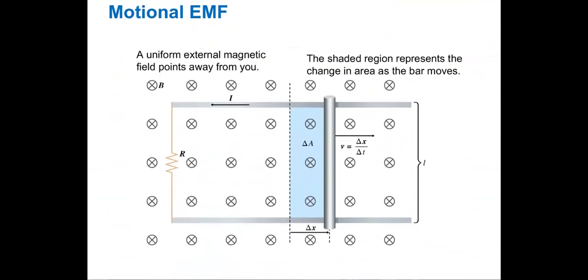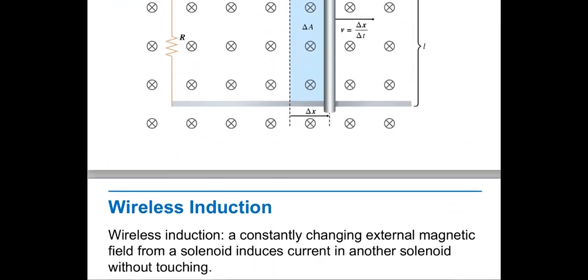Then motional electromotive force, which is a uniform external magnetic field pointing away from you. The shaded region represents the change in area as the bar moves.